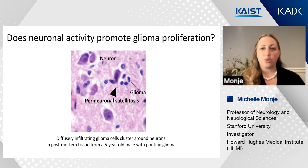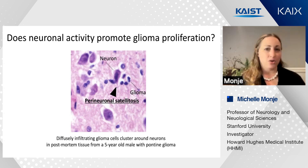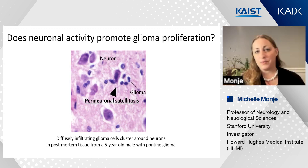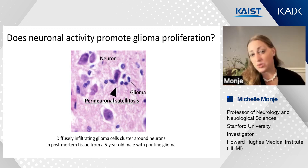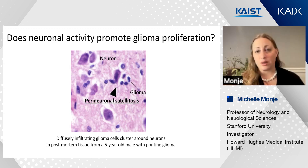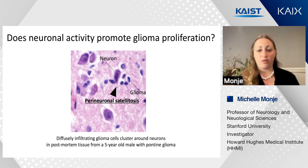This particular H&E image, which so clearly shows the secondary structure of Scherer—now also called perineuronal satellitosis—comes from an early autopsy specimen from a five-year-old patient of mine. It was this child's tumor donation at the time of his death that allowed me to generate the first cell culture and xenograft mouse model of this particular kind of childhood glioma. It's really through such incredibly selfless donations of tumor tissue that we're able to do all of the work that we do, and I want to acknowledge that incredibly important contribution of patients and their families.